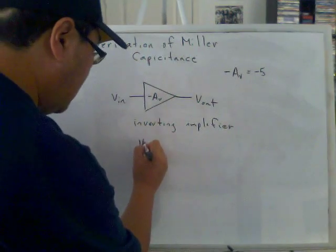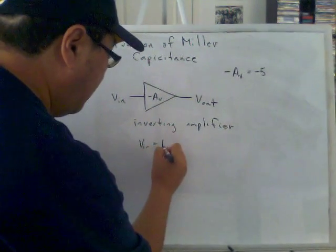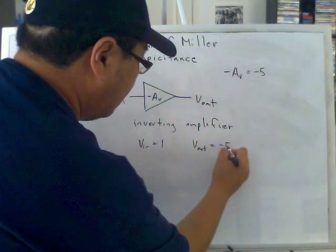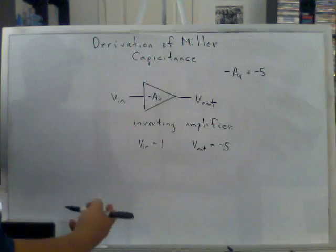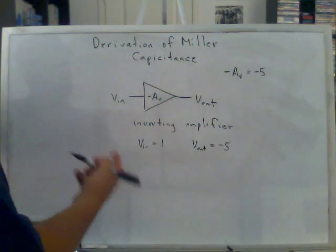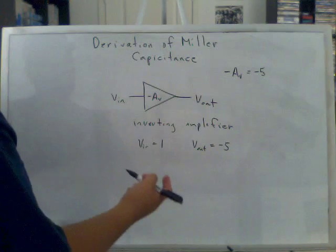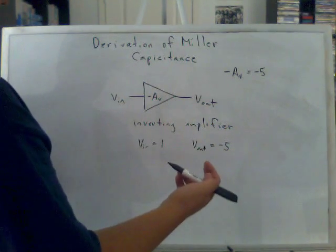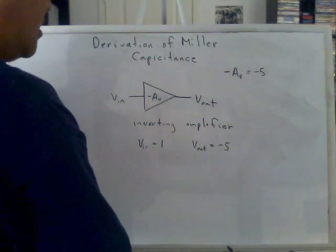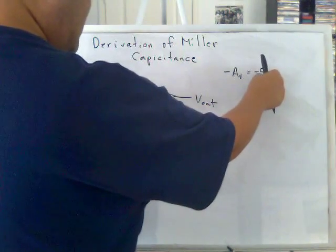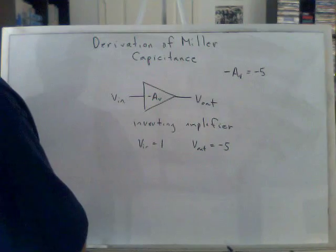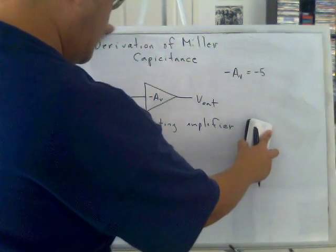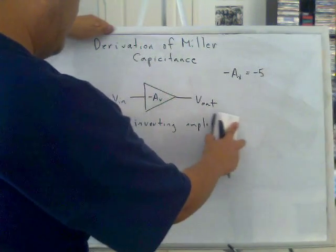If V in equals 1 volt, V out would equal negative 5 volts. If V in is 2 volts, V out would be negative 10 volts. If V in is 3 volts, V out would be negative 15. It has this amplification of negative 5 as an example. This is what an inverting amplifier does.